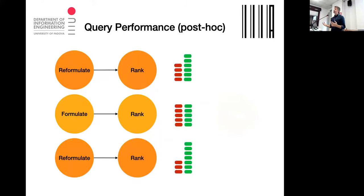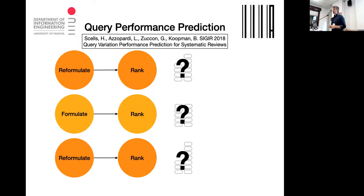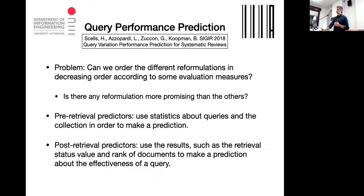Of course, you can perform post-hoc evaluation — run the experiment with different queries, use relevance assessments, use evaluation collections like TREC CLEF. But how about doing this beforehand? Can you predict which reformulation will perform better, or order them in decreasing order of some relevance measure? This is very nice work by Ducon and others from SIGIR 2018 on query variation performance prediction, and there are many approaches for estimating query performance prediction.